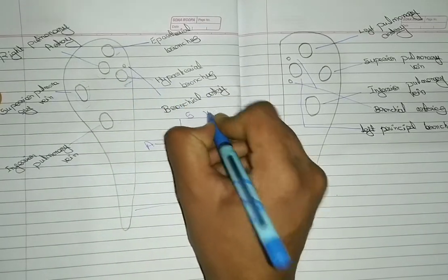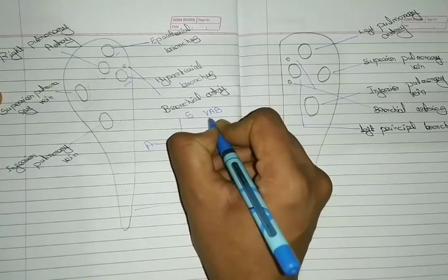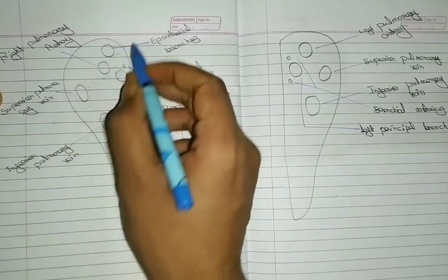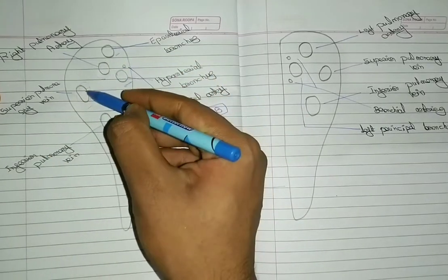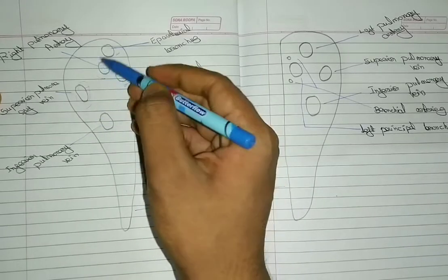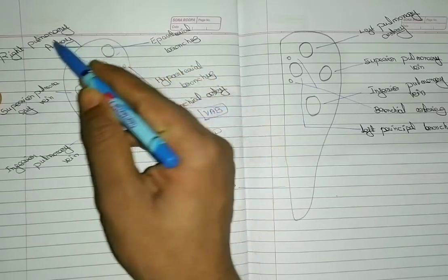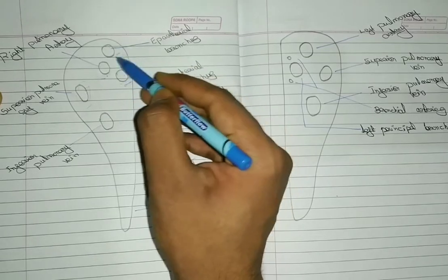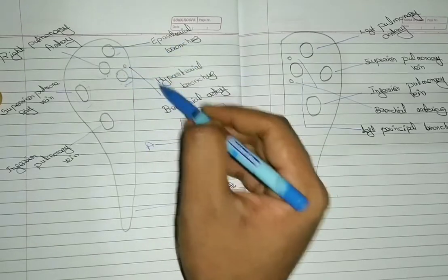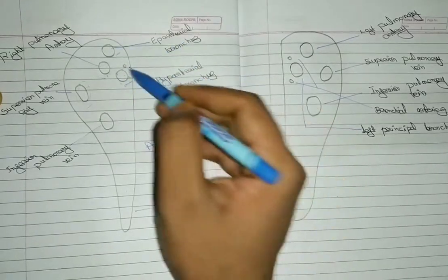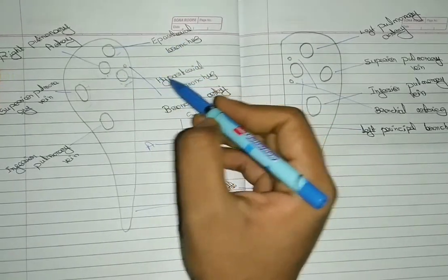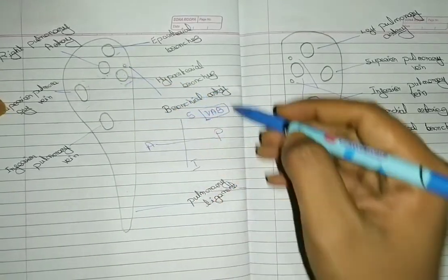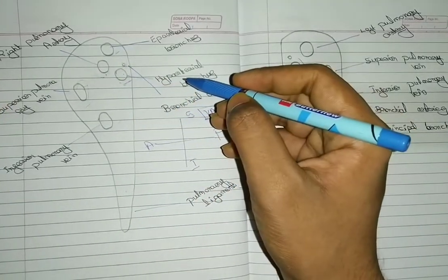You can remember it as V, A, B — Vein, Artery, and Bronchus. The structures are: Superior Pulmonary Vein, Inferior Pulmonary Vein, Right Pulmonary Artery, and Bronchus. There is one bronchial artery in the right lung.